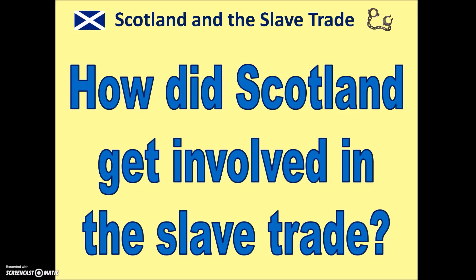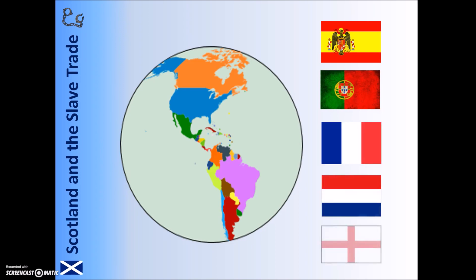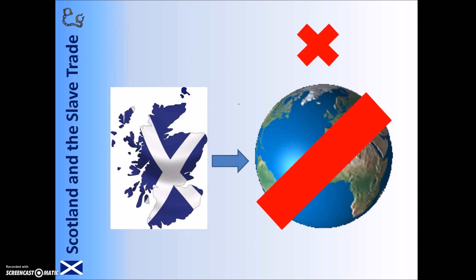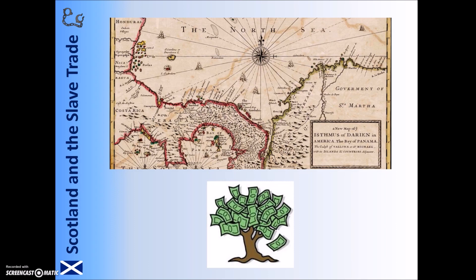So how did Scotland get involved in the Atlantic slave trade? The slave trade originally involved the first countries to colonise the Americas, which was Spain and Portugal. However, later other countries including France, the Netherlands, and England also participated. At first Scotland had no role in the slave trade, largely due to the fact that it had no overseas empire. Scotland had attempted to establish an overseas colony in Panama in the late 1690s as part of what was known as the Darien Scheme. This had been done in the hope of creating huge wealth, but instead was an abject failure, and it essentially bankrupted the country.